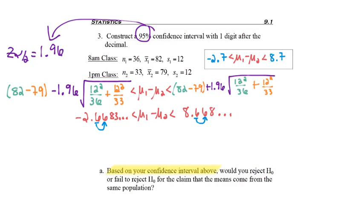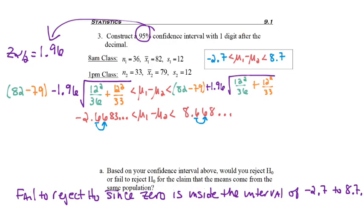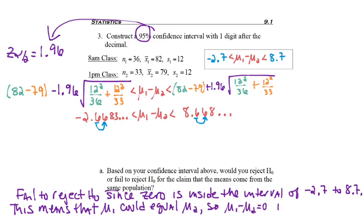Now remember, based on the confidence interval above, we can also decide whether we would reject or fail to reject H0. And specifically, we're focusing on the claim that the means, the population means, come from the same population. Same meaning mu1 equals mu2, so that subtraction would be 0. The subtraction of two equal numbers. So in our case, we would fail to reject H0 since 0 is inside the interval of negative 2.7 to positive 8.7. Remember, the phrase is you reject if 0 is not inside. If 0 is inside, then we do not reject, which is fail to reject. And just to elaborate, this means that mu1 could equal mu2. So mu1 minus mu2 equals 0 is possible because it's one of the possible values.